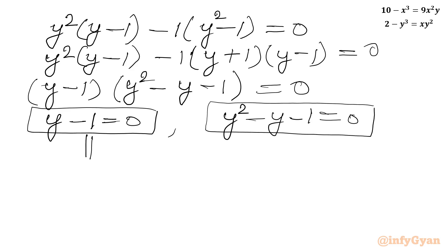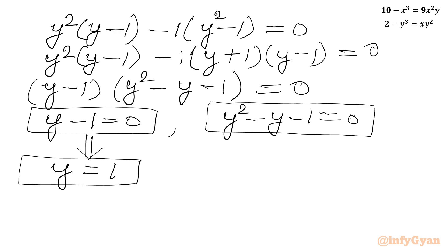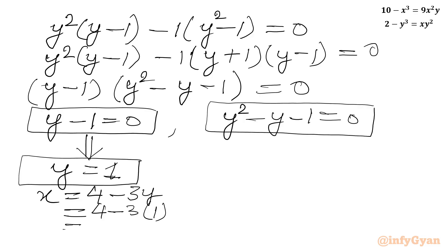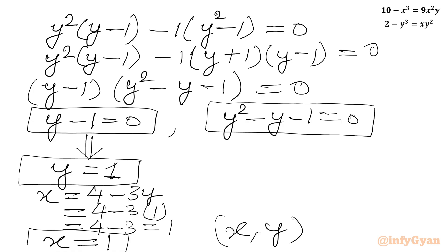From the first factor, y minus 1 equals 0, so y equals 1. Then x equals 4 minus 3y equals 4 minus 3 times 1 equals 1. So x equals 1, giving us the ordered pair (1, 1) as our first solution.